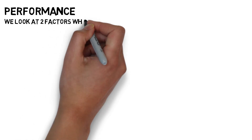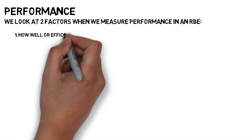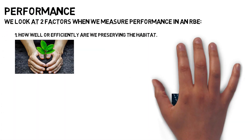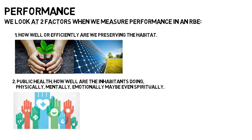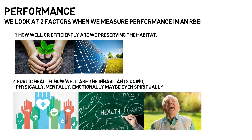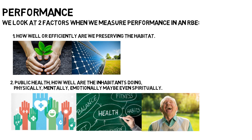We primarily look at two factors when measuring the performance of an RBE: number one, how well or efficiently we are preserving the habitat; and number two, public health — how well the inhabitants are doing physically, mentally, emotionally, and maybe even spiritually. In our current monetary system, performance is measured by Gross Domestic Product, or GDP. It is seen as an improvement when GDP goes up — the higher the consumption, the higher the GDP. Inefficiency and problems often result in higher GDP. Importantly, GDP does not indicate anything about public health or the quality of people's lives. In fact, when public health goes down, GDP often goes up because people spend more money on treatments and medicine.